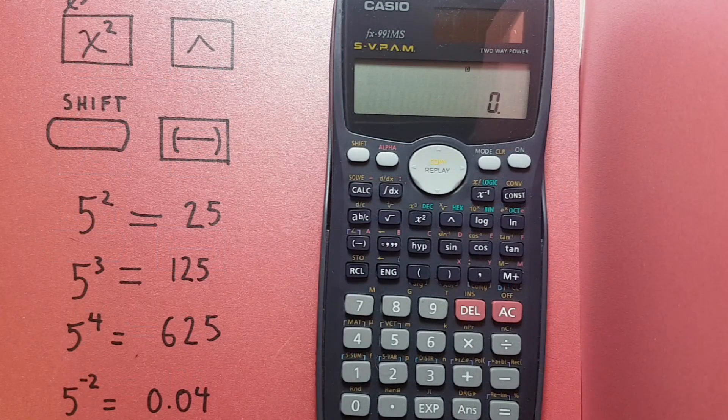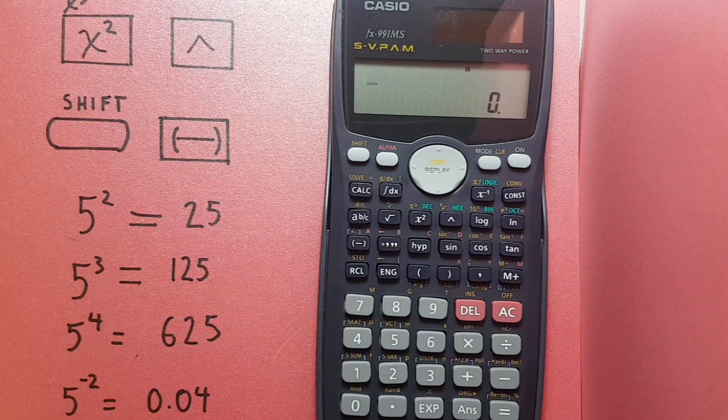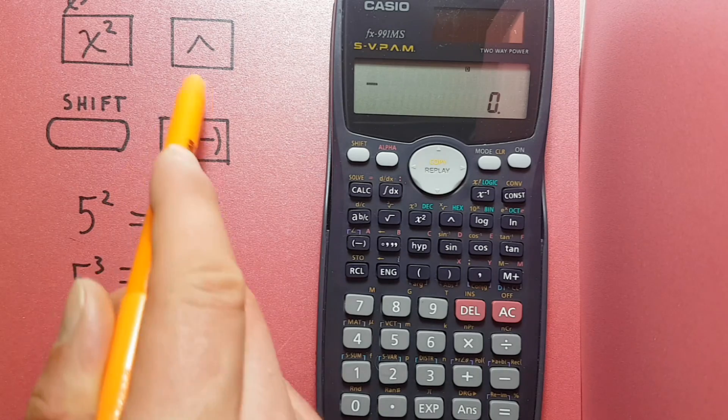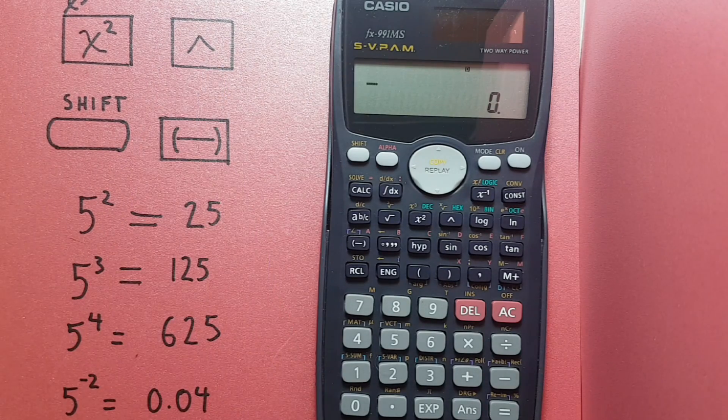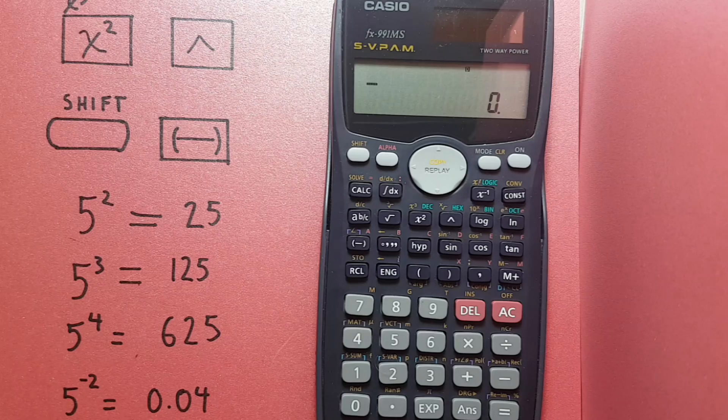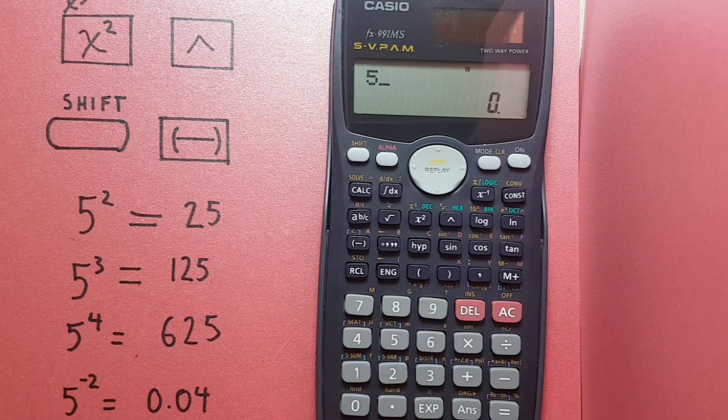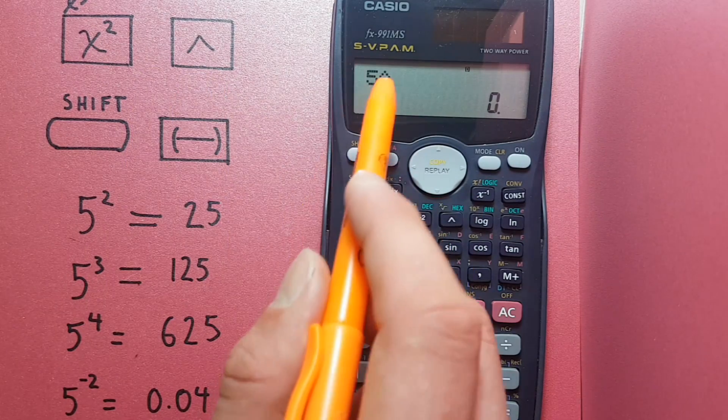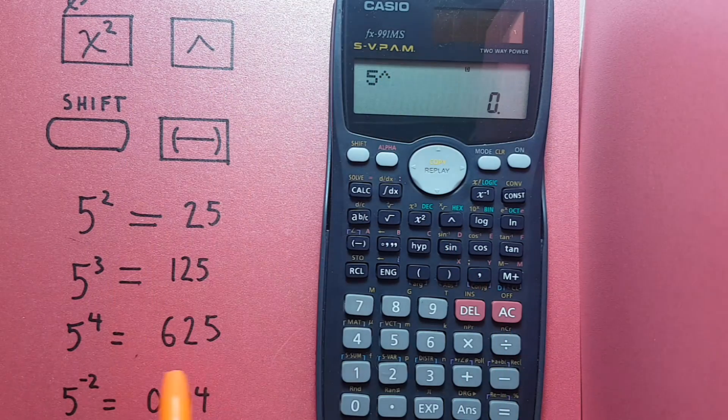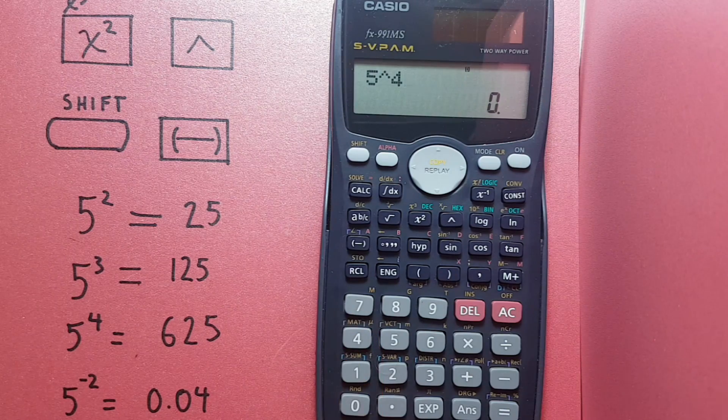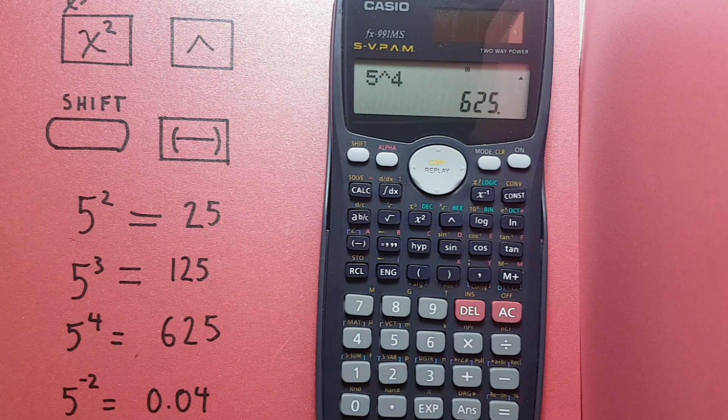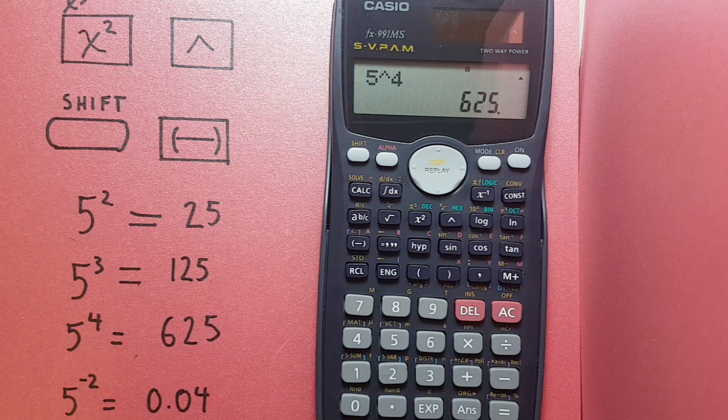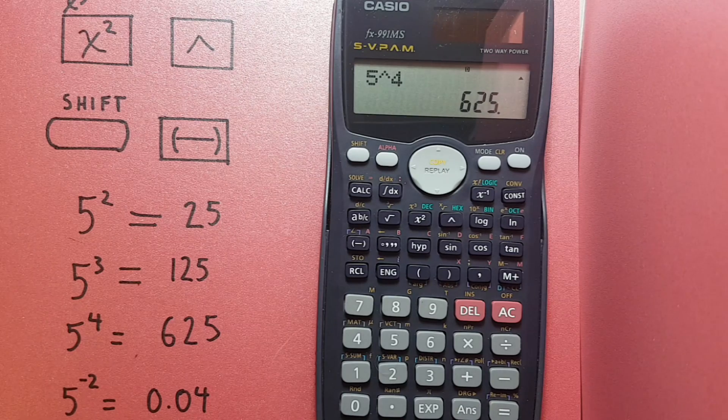But what if we wanted to do an exponent that wasn't a 2 or a 3? That's where we use this button here. So if we wanted to do 5 to the power of 4, we would put 5 on the screen and then press this up arrow key. You can see it on the top there, and then 4, and then equals. This gives us 625, or 5 to the power of 4.